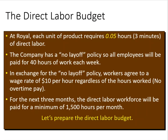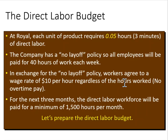Here we have an example. At Royal, each unit of product requires 0.05 hours, or three minutes, of direct labor. The company has a no-layoff policy, so all employees will be paid for 40 hours of work each week. In exchange, workers agree to a wage rate of $10 per hour regardless of the hours worked, meaning they don't get any overtime. For the next three months, the direct labor workforce will be paid for a minimum of 1,500 hours per month because of this no-layoff policy.